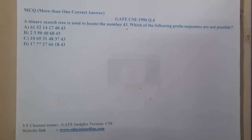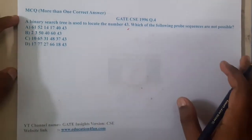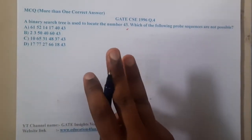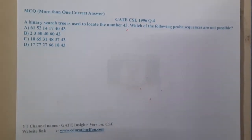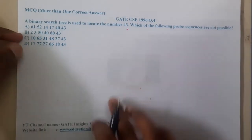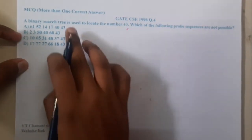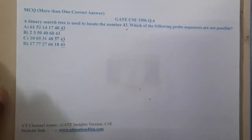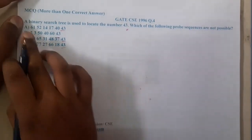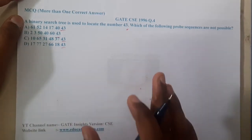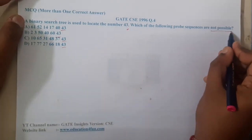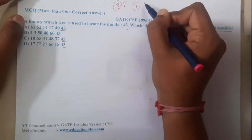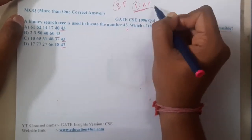So let us start observing. Basically, here what we are searching for is 43. What they gave is the probing sequence — the exact path you went to find 43. At the end of each probing sequence, you found 43. They are asking which sequence is not possible. Three of these options are possible and one is not possible, so we need to find that option.